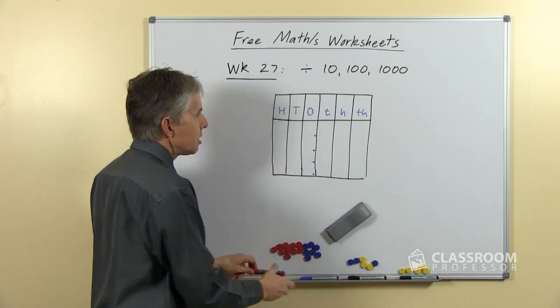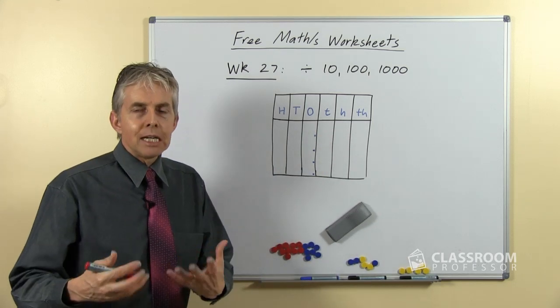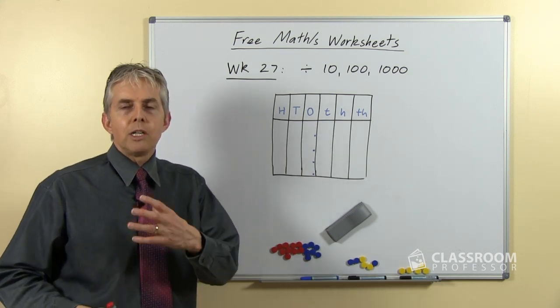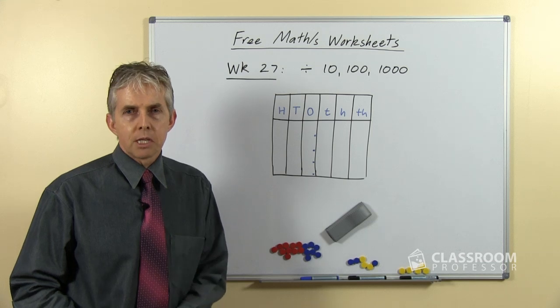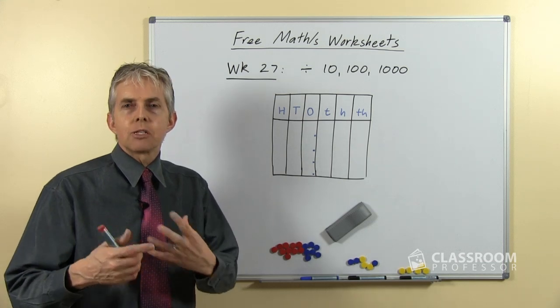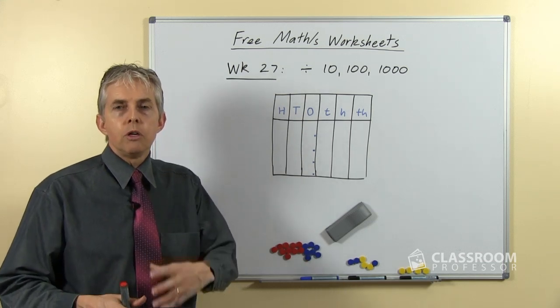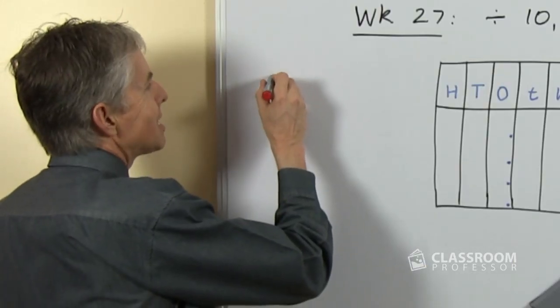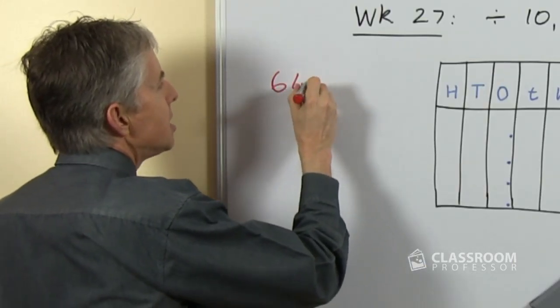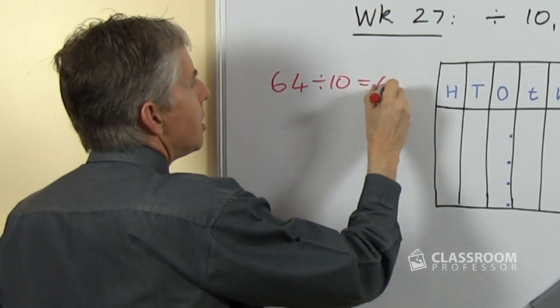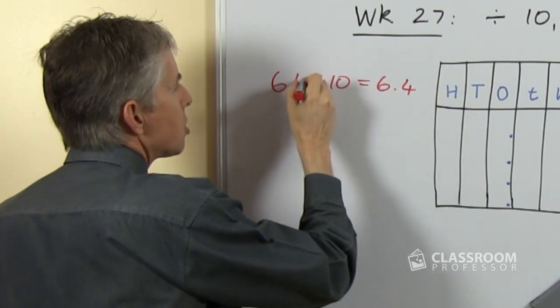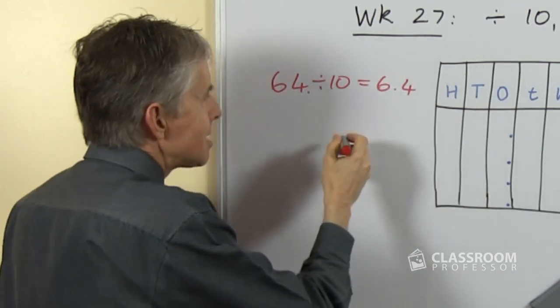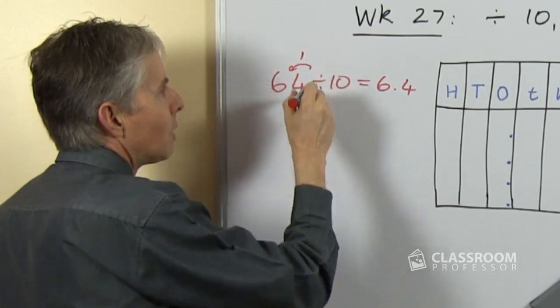As I've said in other videos, we don't recommend that students move the decimal point or use that sort of language or approach. Now we know that that's what it looks like. So let's take an example: say 64 divided by 10, what's that going to be? It's 6.4. It sort of looks like the decimal point, which was after the 4, has skipped over this way by one place.